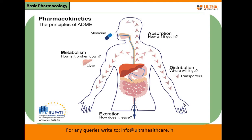Second is distribution: after the drug enters the body, it gets distributed to various tissues and cells via blood vessels and blood. Third is metabolism: the drug is broken down in the liver, where most enzymatic reactions take place, changing the drug so it can be excreted. Finally, the fourth step is excretion or elimination — the drug is removed from the body.